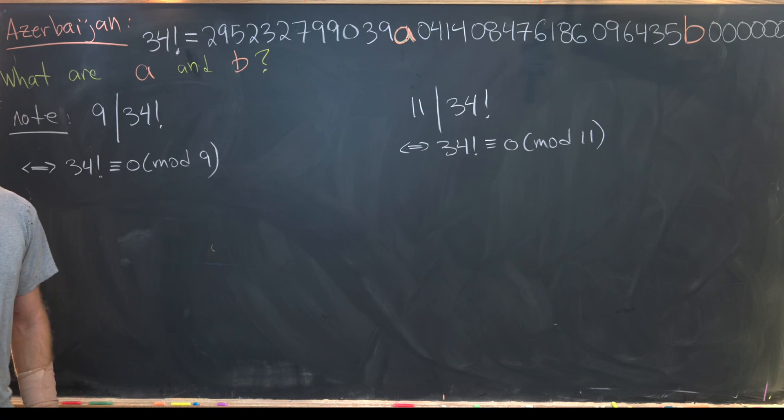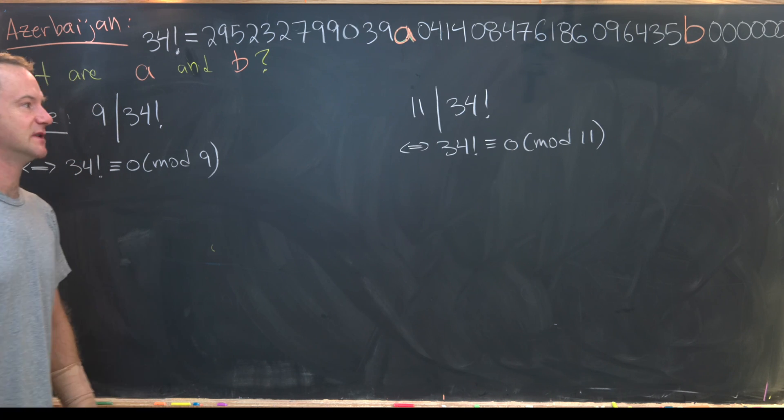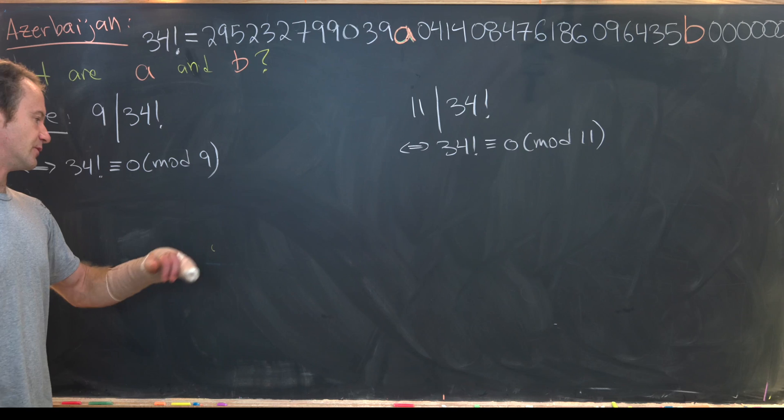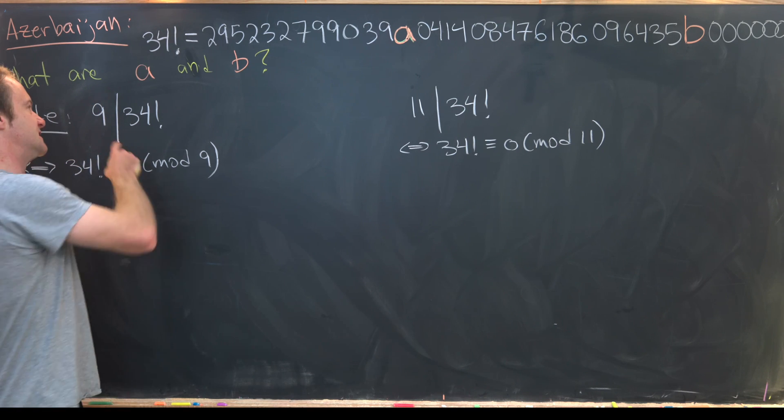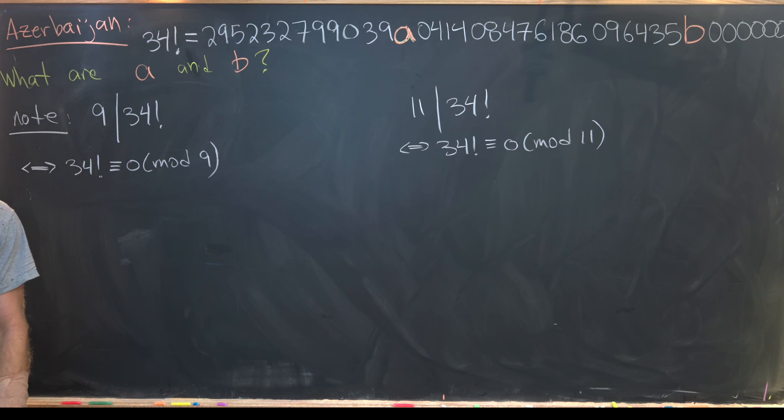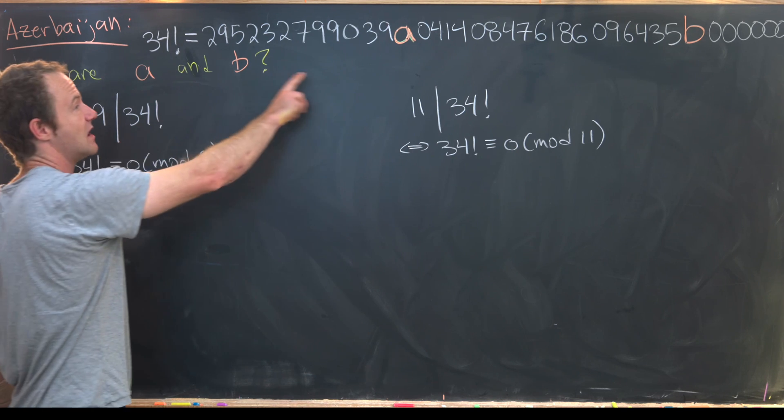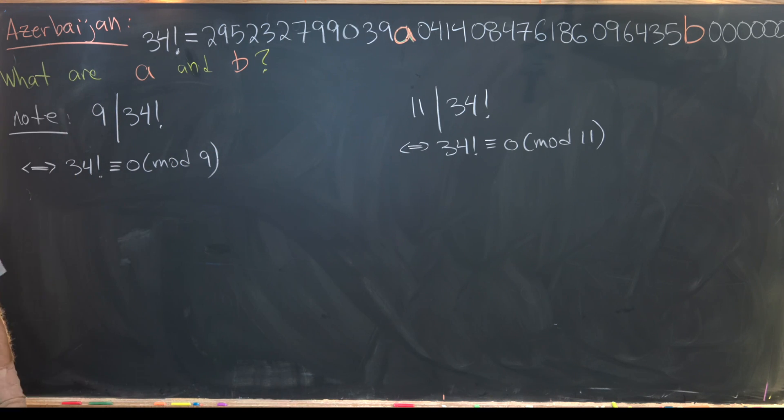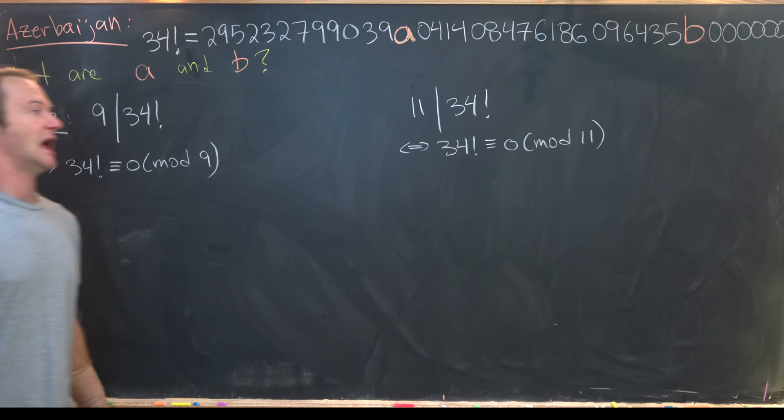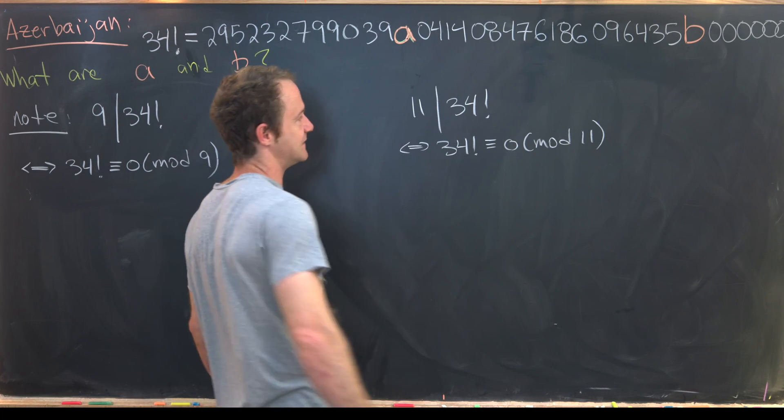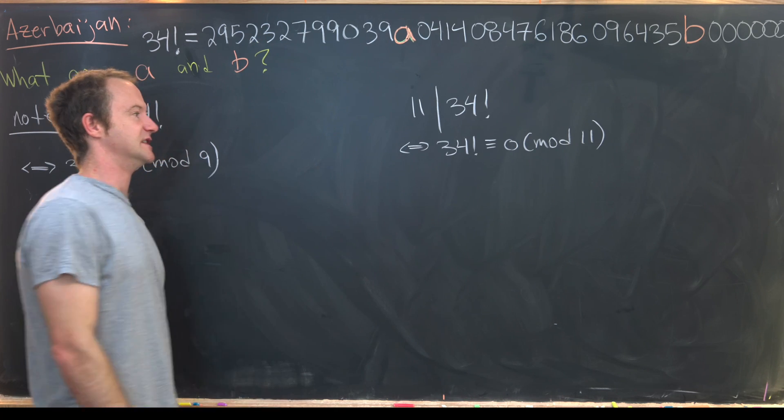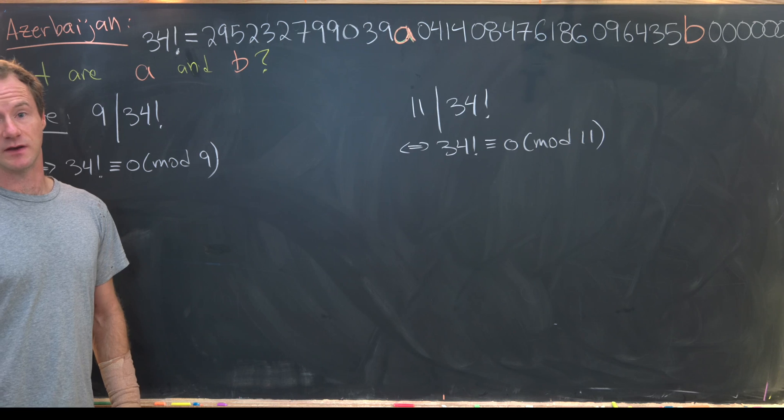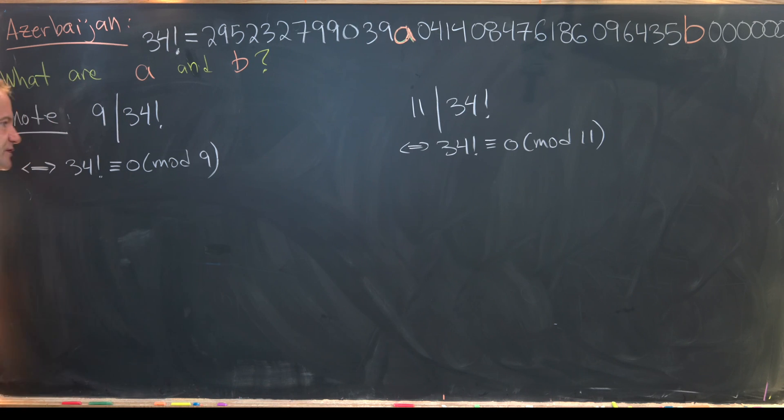Now where can we go from here? Well, luckily, there are nice divisibility tests for divisibility with respect to 9 and 11. So a number is divisible by 9 if and only if the sum of the digits is also divisible by 9. And likewise, a number is divisible by 11 if and only if the alternating sum of the digits is divisible by 11.